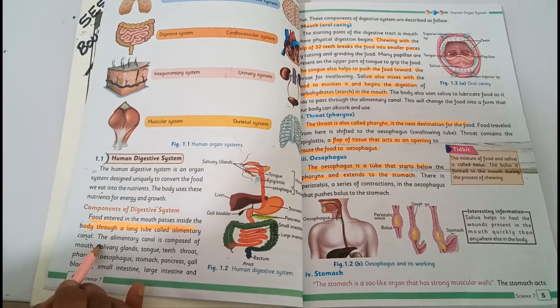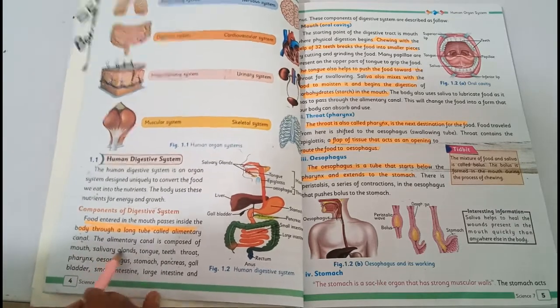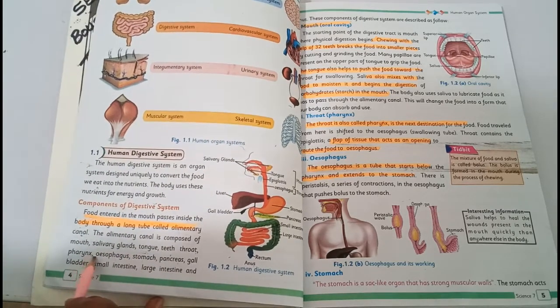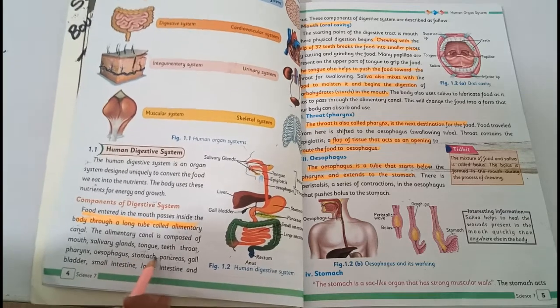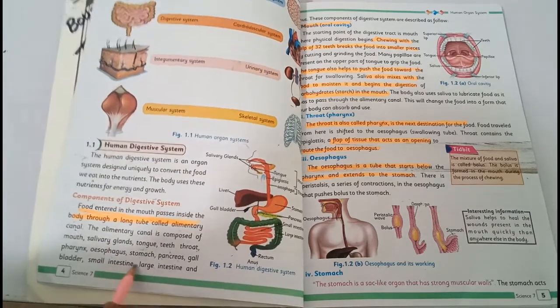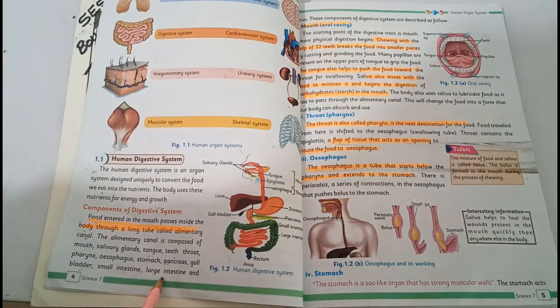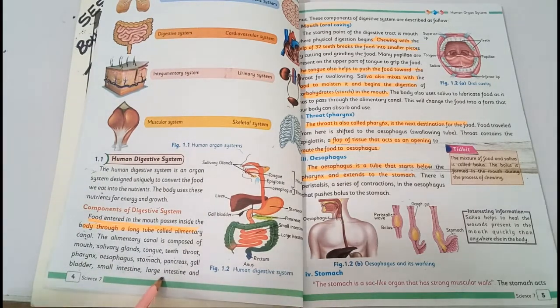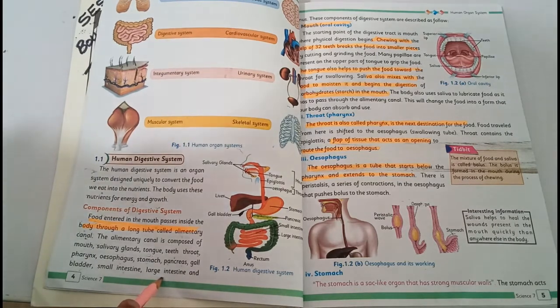The alimentary canal is composed of mouth, salivary gland, tongue, teeth, throat, pharynx, esophagus, stomach, pancreas, gallbladder, small intestine, large intestine and anus. These are the organs which are helpful in our digestive system.